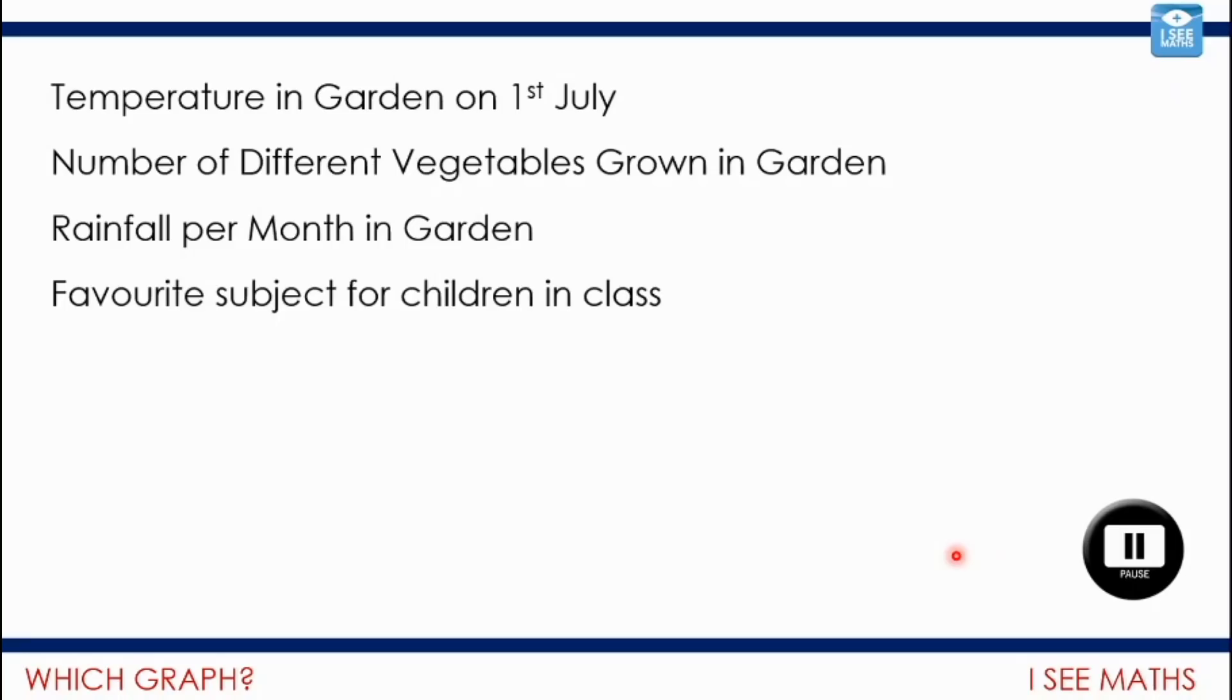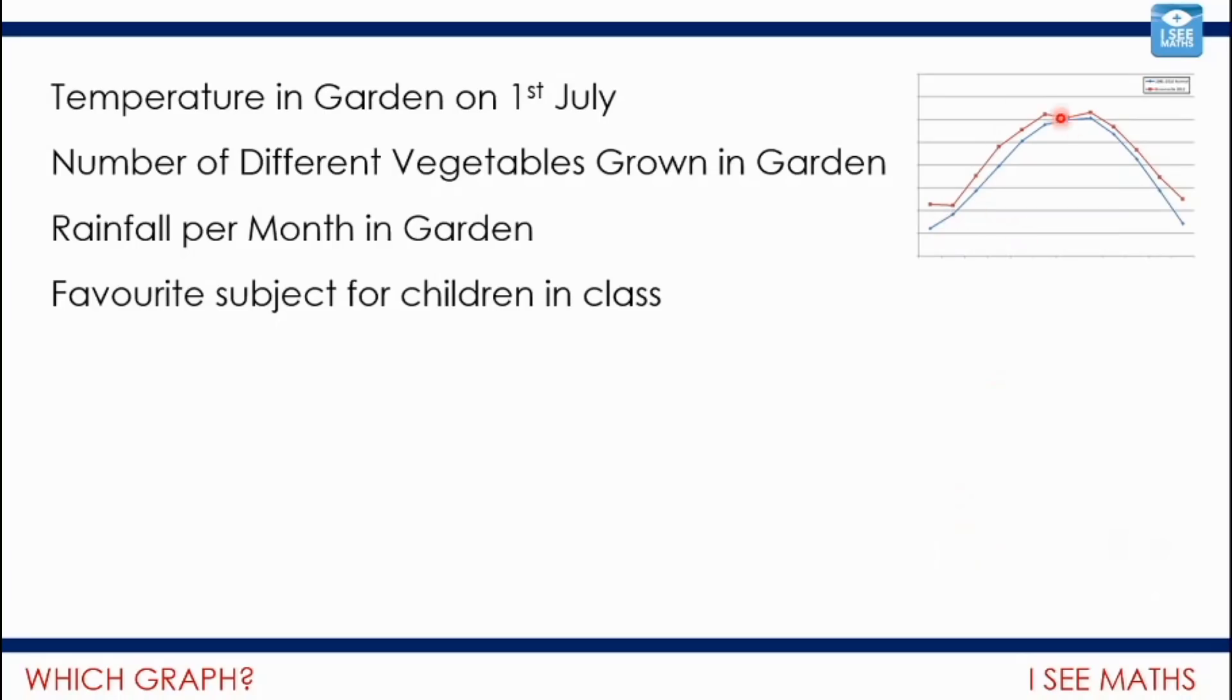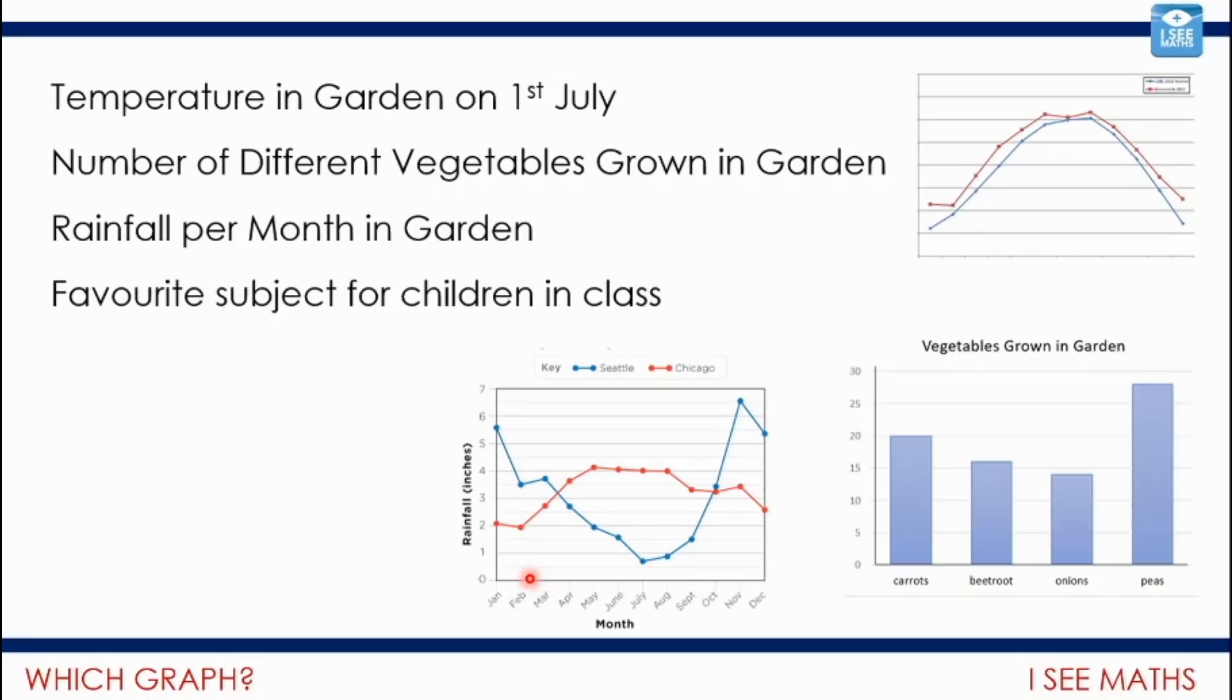Okay, let's have a look. Temperature in garden on 1st of July, I think I'd probably show that in a line graph because the temperature of course will steadily change. It'll probably increase through the day, particularly if it's a sunny day like we've been having recently. Number of different vegetables grown in a garden. There, I think that's most appropriate to be in a bar graph so I can see how many and you can see grouped by the different vegetables there: carrots, beetroots, onions and peas for example. Now rainfall per month in garden, it could be that it's a bar graph and we have 12 bars. But I would like still using a line graph here. So this one shows for Seattle and for Chicago the rainfall per month in a garden. And then I can see the trend that's happening, whether the rainfall is increasing or decreasing throughout that time. Now favourite subject for children in class, I went for a pie chart here because I think this is a comparison of trying to see which subjects are more popular than others. So we can't see how many people were asked here, but we can look at which subjects were relatively more popular than others.